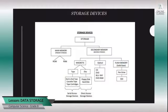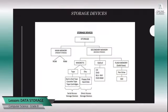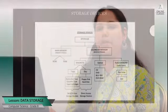Here we see the classification of storage. Storage is mainly divided into two types: main memory and secondary memory. Main memory is also called primary storage, whereas secondary memory is also called backing storage device. Under main memory we have two types: ROM and RAM. ROM stands for read only memory and RAM stands for random access memory. We will be discussing each one in detail in the coming slides.